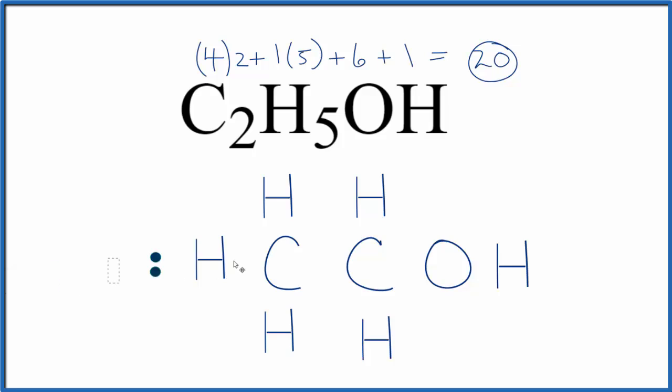Next, we'll put a pair of electrons between atoms. That's going to form the chemical bond. So we'll do that for all these atoms here. So far, we've used 16 valence electrons. We have four more. Let's put those on the oxygen, complete the octet for the oxygen.